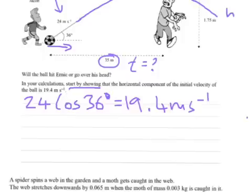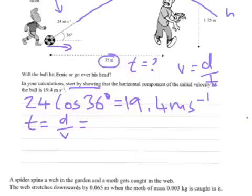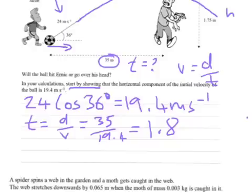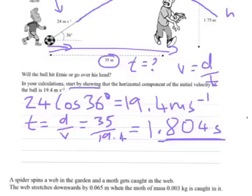And then the next thing to do is to find that time. So we've got the distance, we've got the velocity. Velocity is distance over time. If we're trying to find the time, it's distance over velocity. And we can just plug those numbers there: 35 metres divided by the velocity of 19.4 metres per second will equal a relatively short 1.804 seconds. So that's the time that it takes to reach the distance away. Now we have to work out the vertical height at that time.